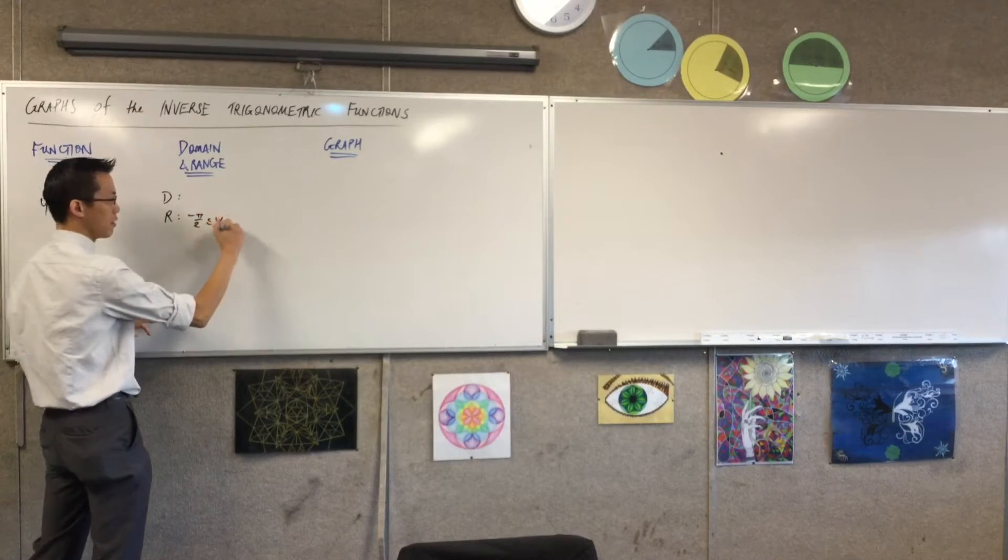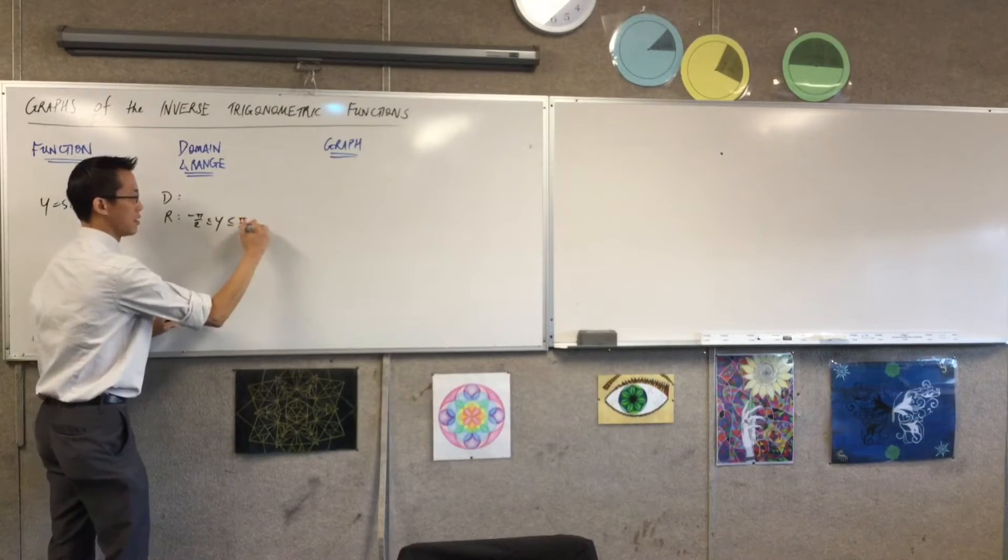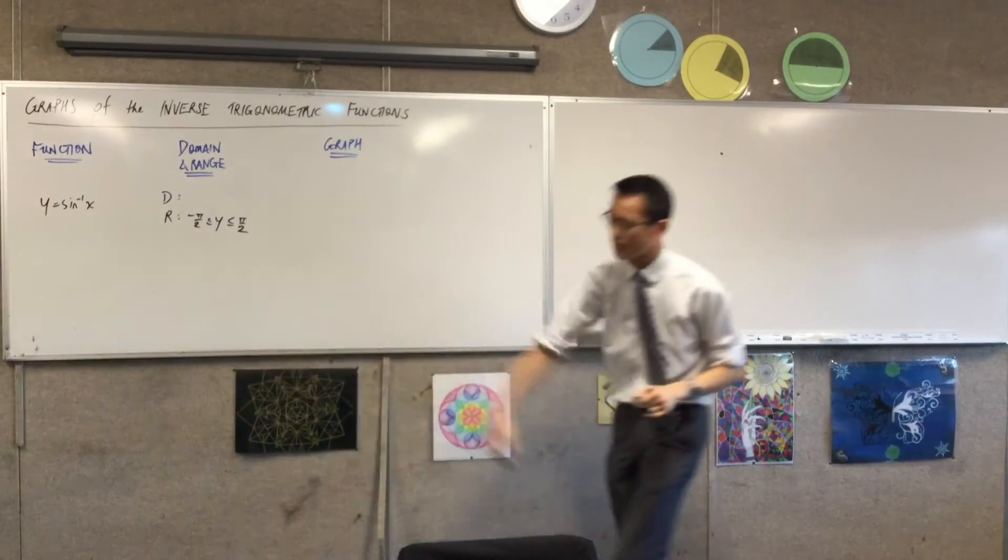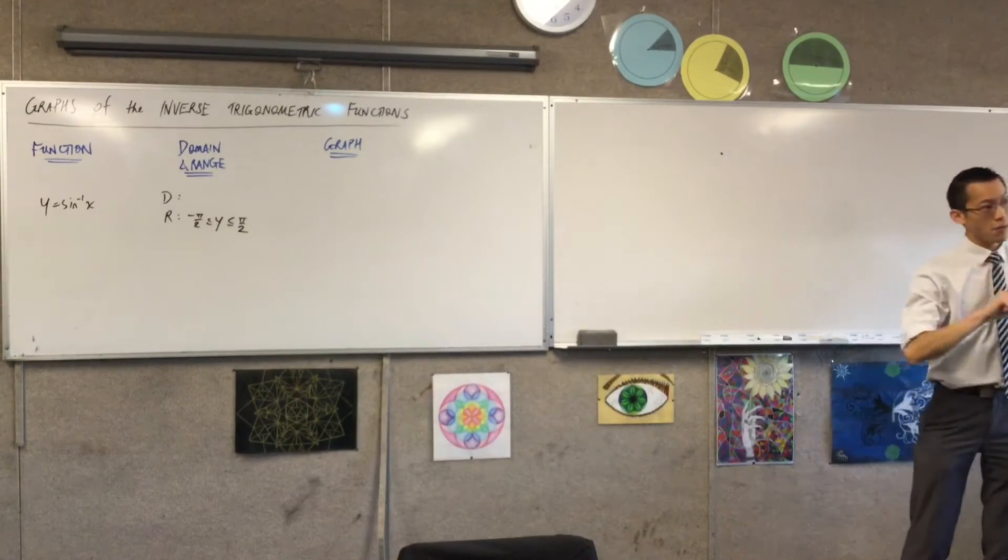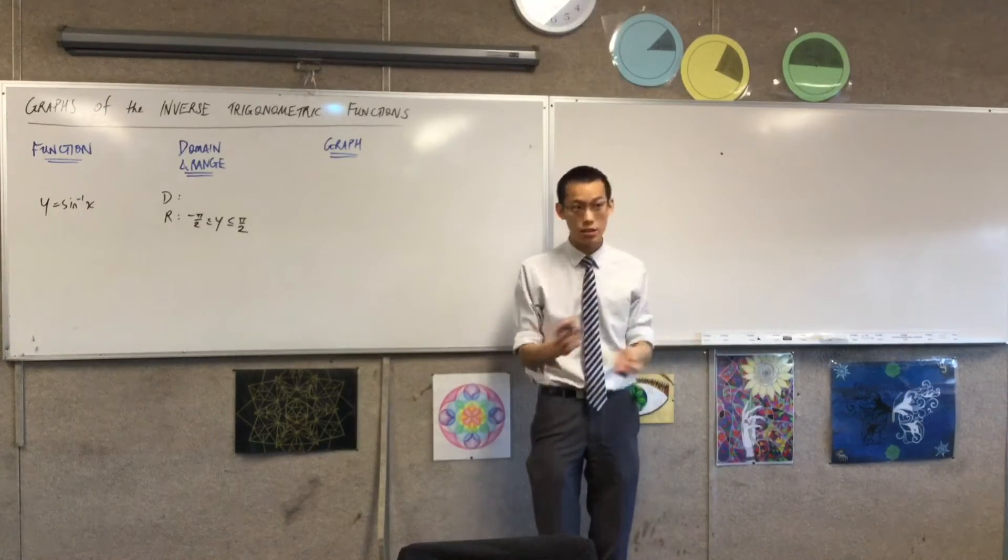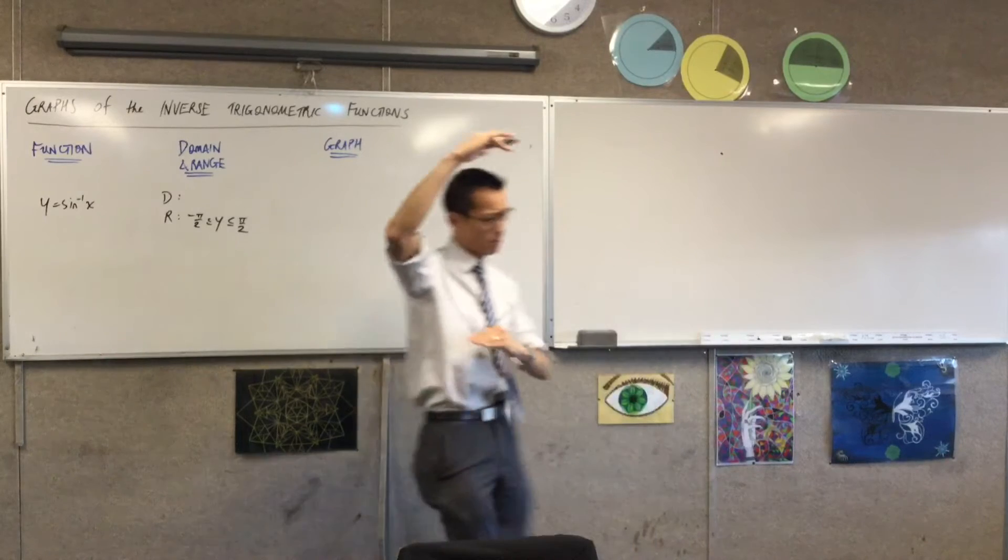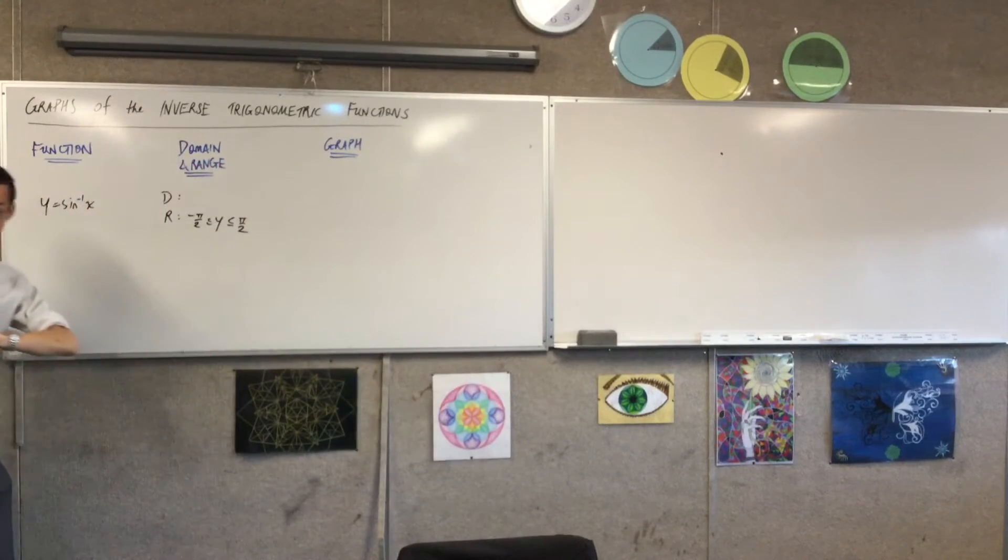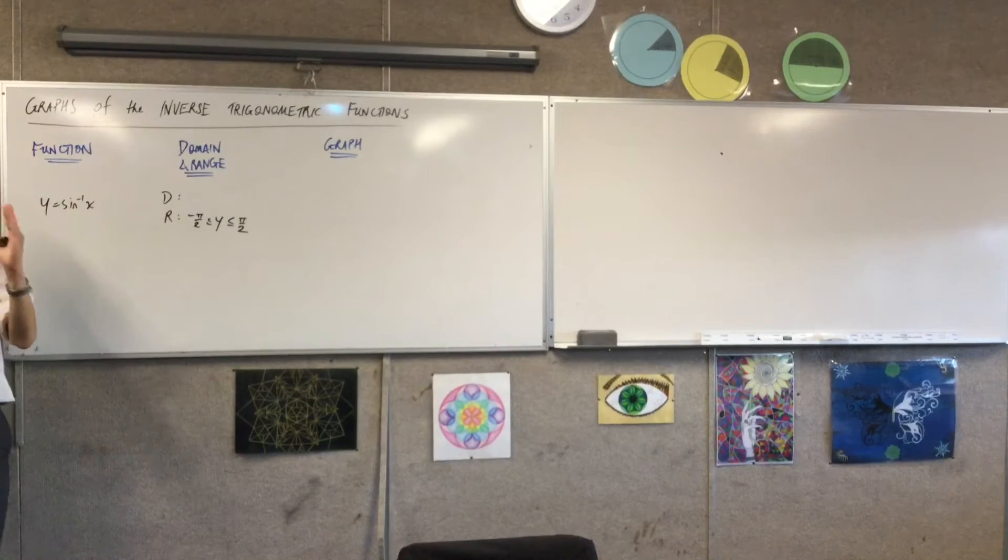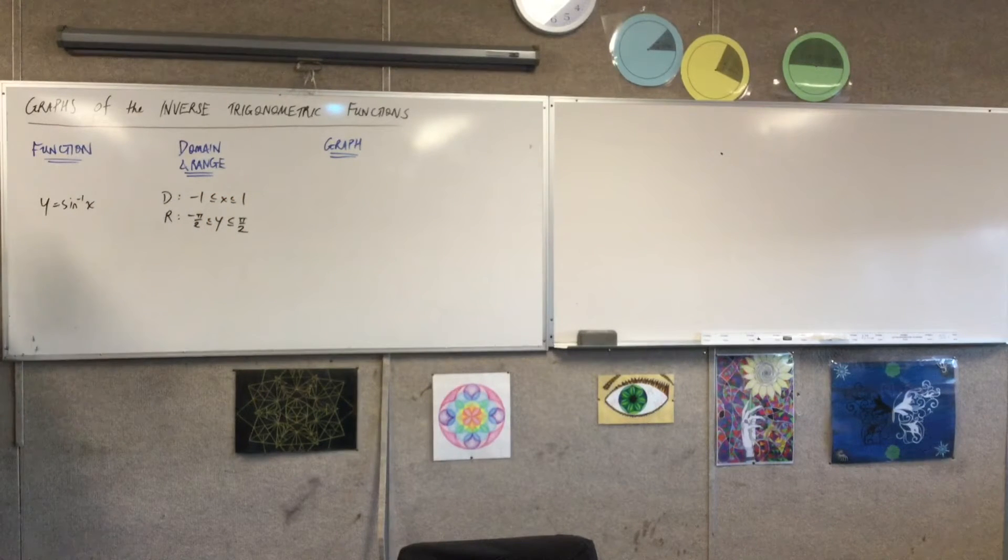The domain restriction comes from what was innate to the trigonometric functions before—the amplitude. Before, the amplitude was −1 to 1, so now that's our domain restriction: −1 ≤ x ≤ 1.